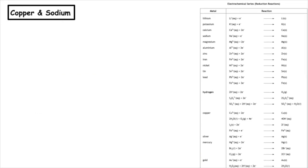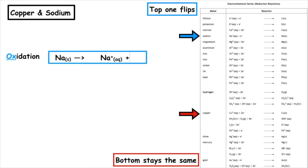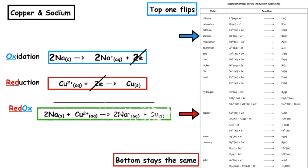Example two: copper and sodium. First, identify their positions in the electrochemical series — top one flips, bottom one stays the same. The oxidation is Na(s) → Na⁺(aq) + e⁻, and the reduction is Cu²⁺(aq) + 2e⁻ → Cu(s). The first equation has one electron and the second has two, so we multiply the oxidation equation by two: 2Na(s) → 2Na⁺(aq) + 2e⁻. We can now cancel the electrons and write the overall redox: 2Na(s) + Cu²⁺(aq) → 2Na⁺(aq) + Cu(s).